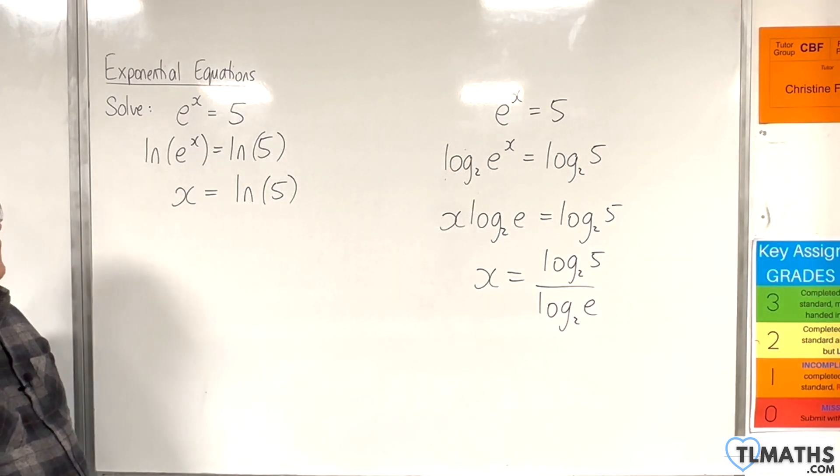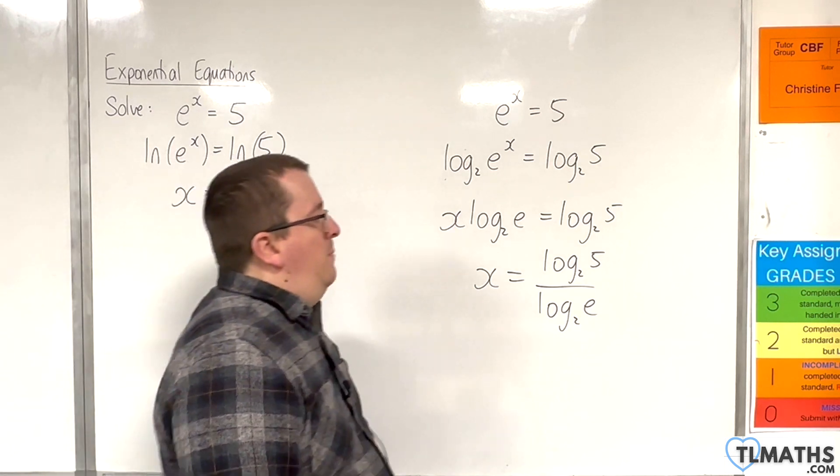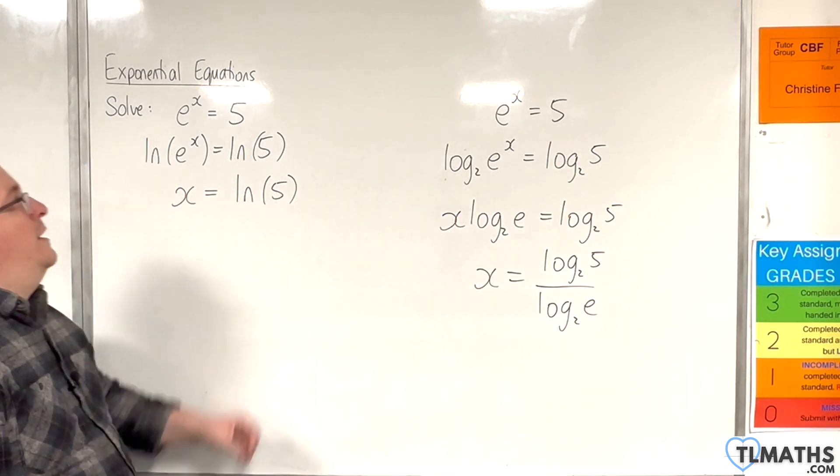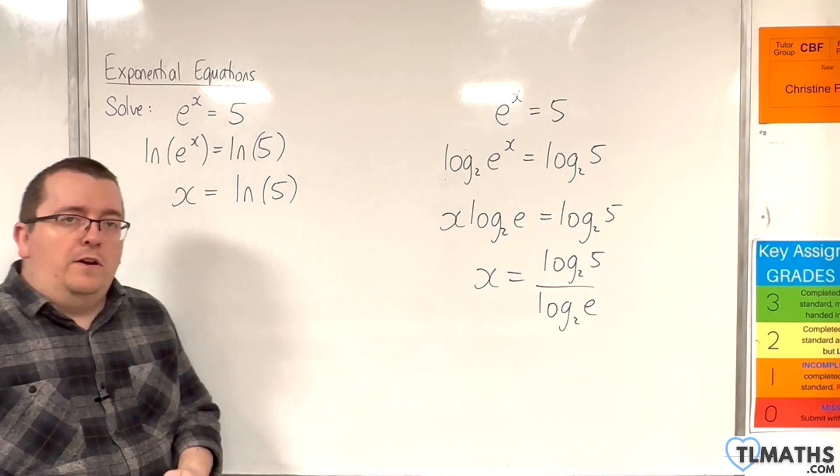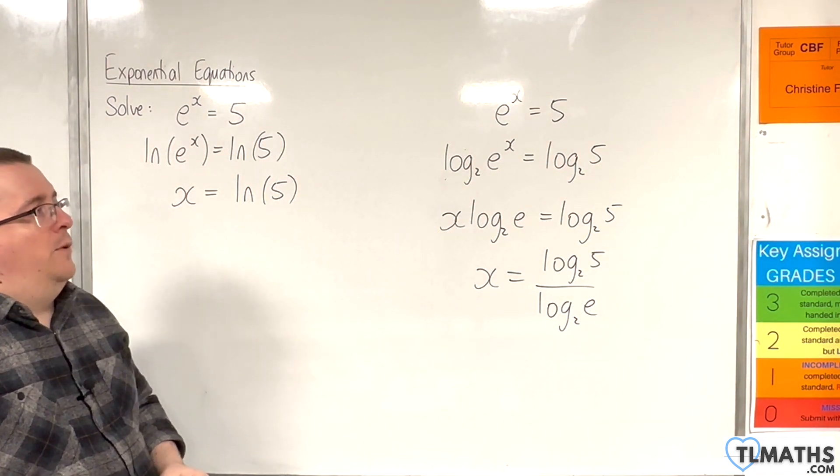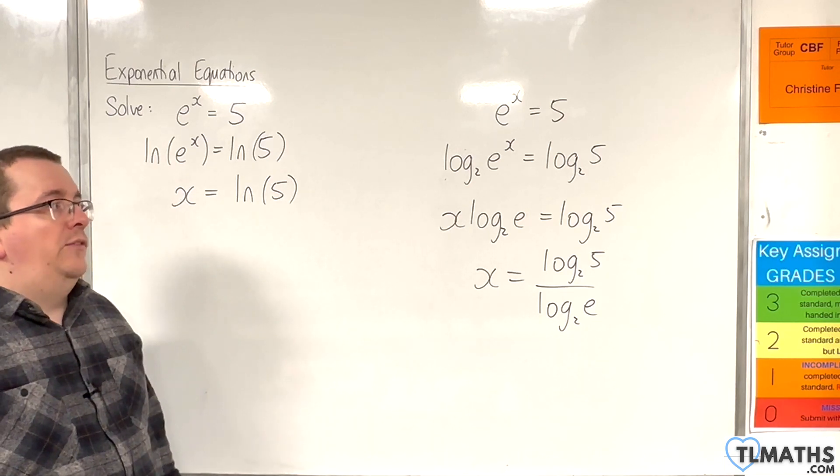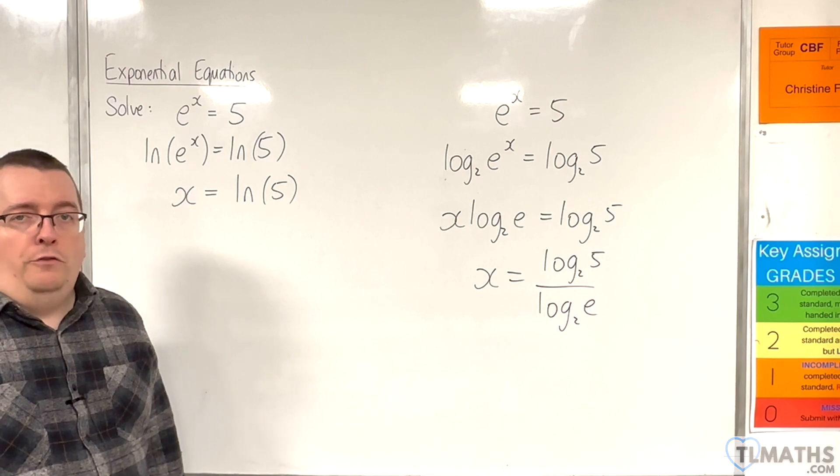Now, of course, you're not going to see people really using this method, because it's much easier to go straight from e to the x equals 5 to x is ln of 5. But the principle of logging both sides remains the same, even if we've got e involved.